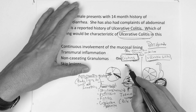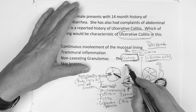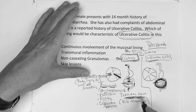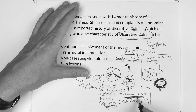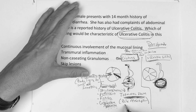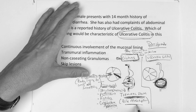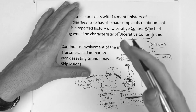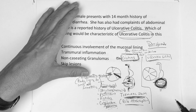As for location: Crohn's can be anywhere from tip to tip, but the one I want you to know is the terminal ileum — because that's where bile absorption occurs, and there are exam questions specifically about that.